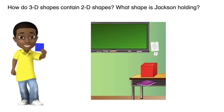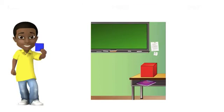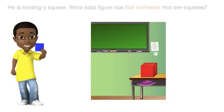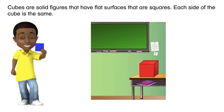What shape is Jackson holding? He is holding a square. What solid figure has flat surfaces that are squares? Cubes are solid figures that have flat surfaces that are squares. Each side of the cube is the same.